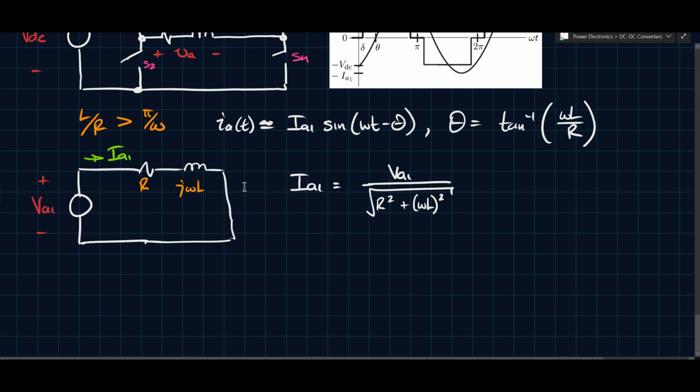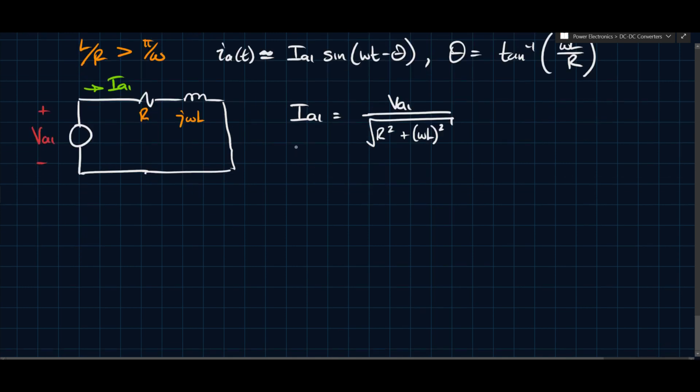Now we can do the same thing with VA1, and we can do that using the Fourier expansion. So we have VA1 can be defined as the following. I'm sure you're familiar with the Fourier series and the Fourier transform at this point, and if you're not, then that's definitely beyond the scope of what we're covering.